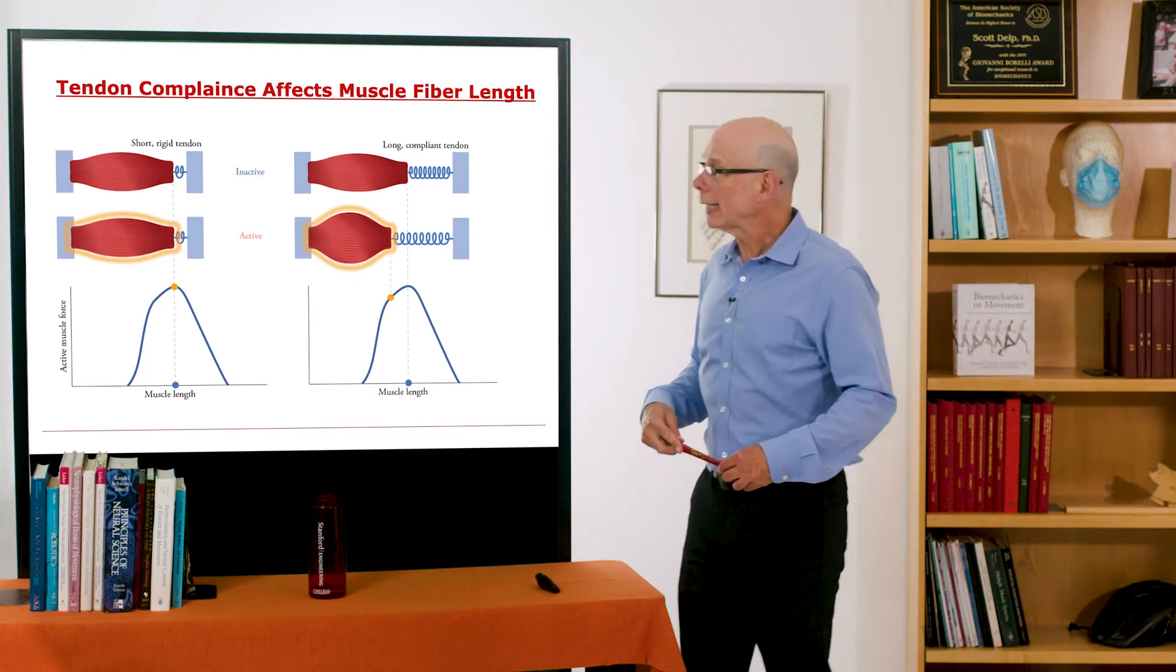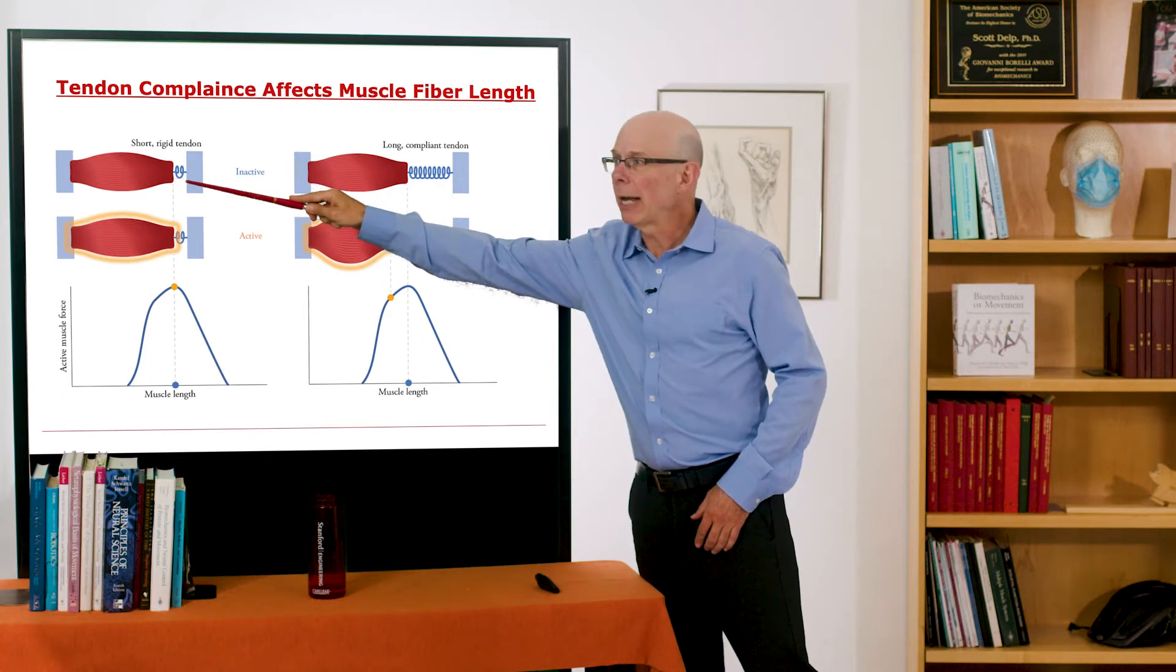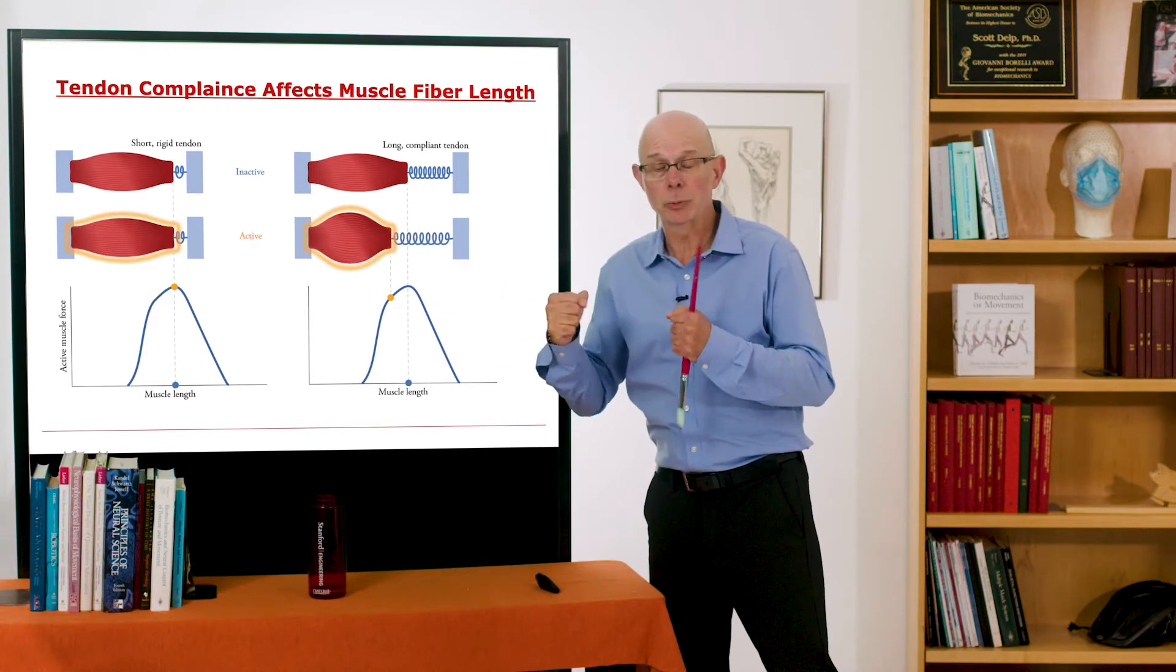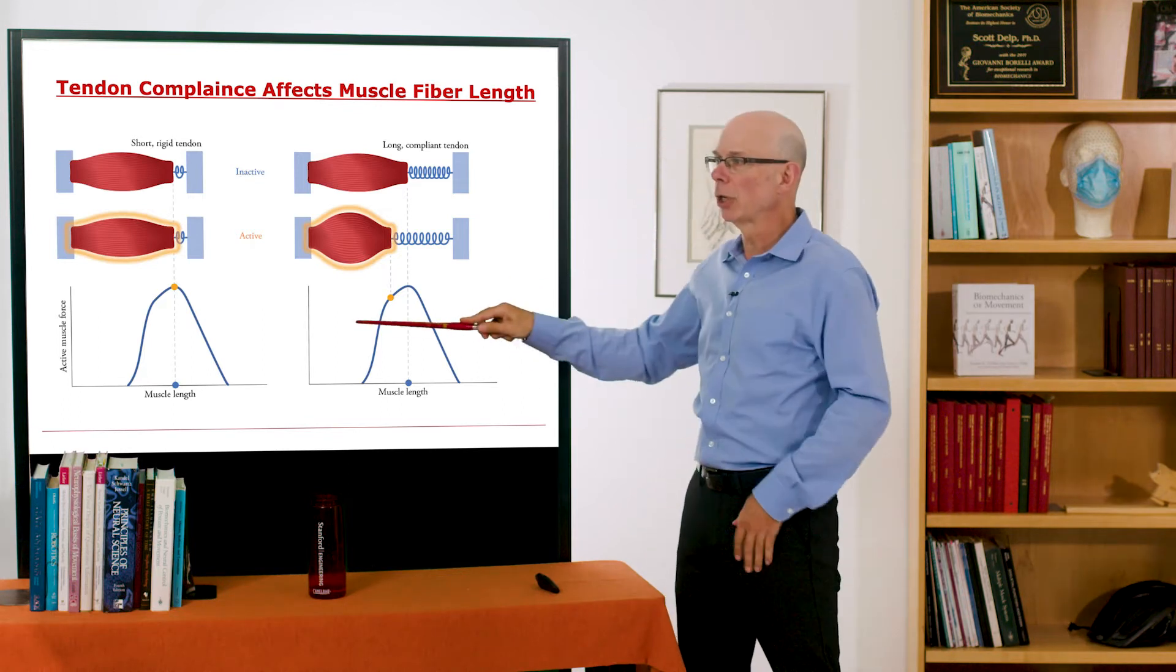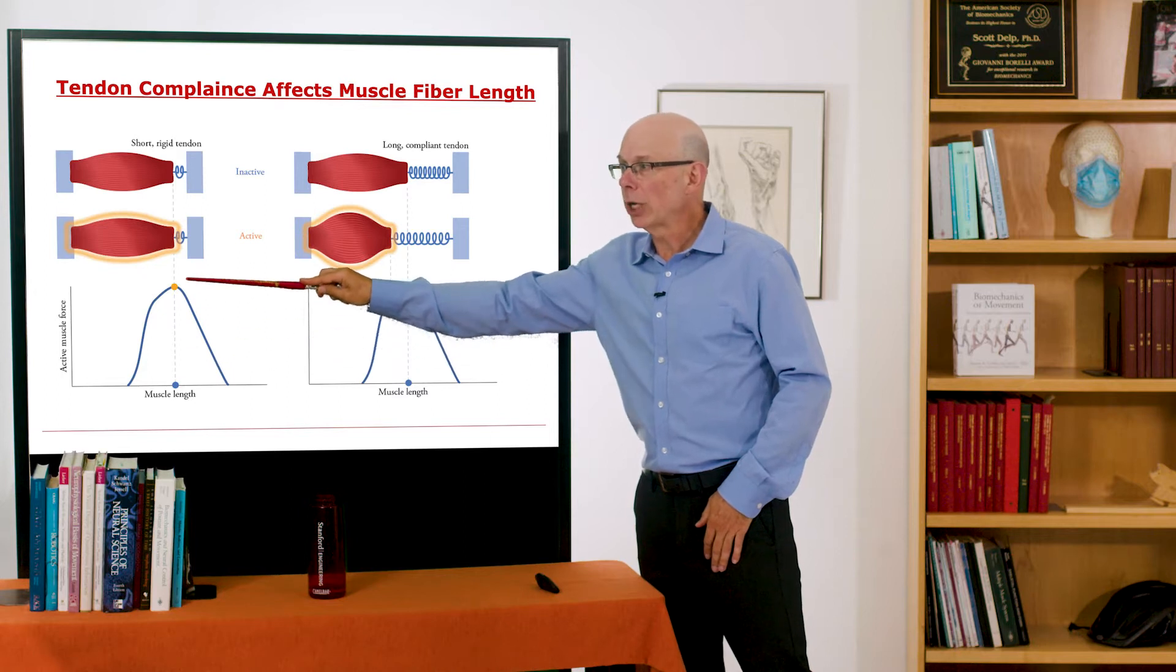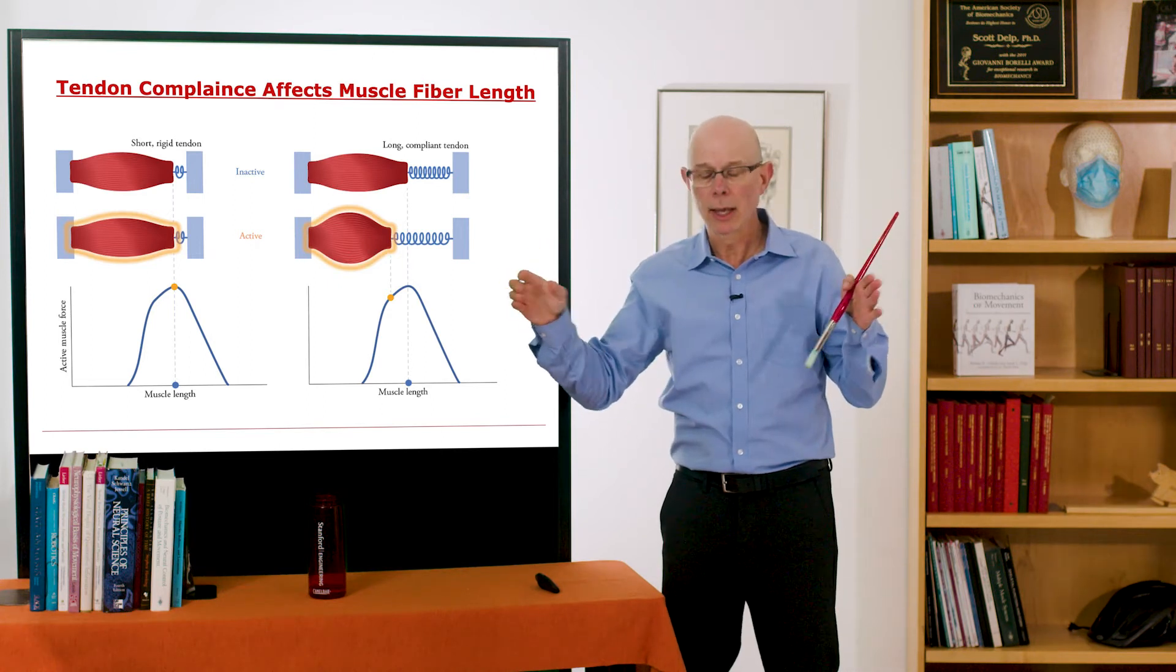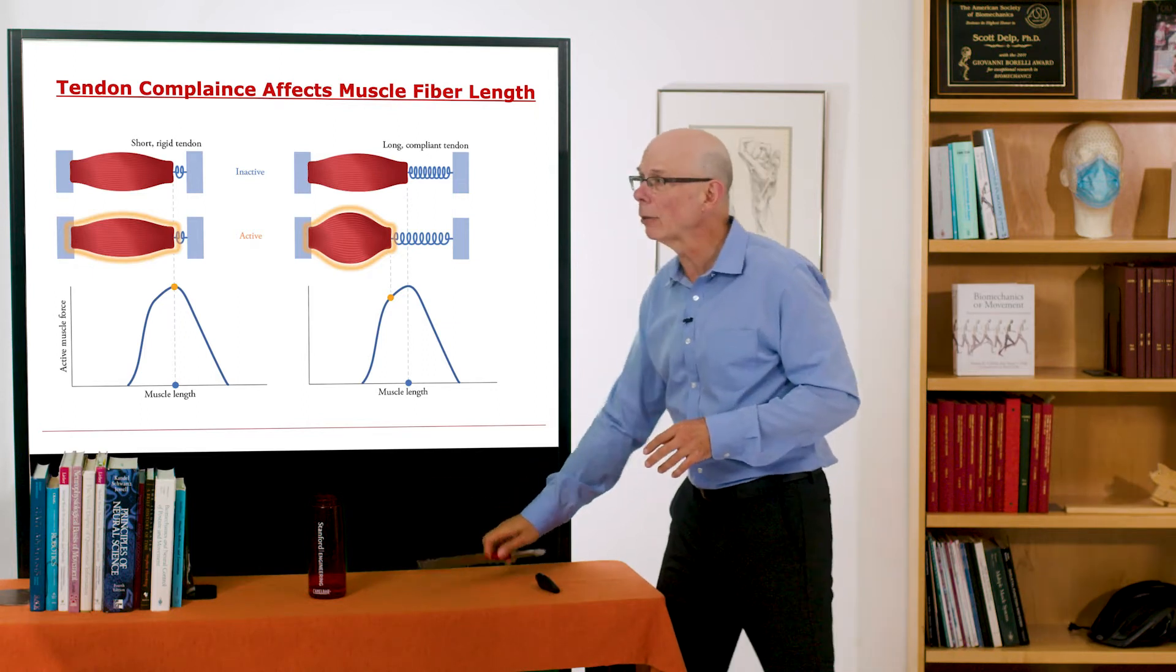So let's say I have a muscle that has a certain set of fibers, but it has a short rigid tendon. I then excite that muscle. So the muscle is now generating force because the tendon is so short, it's essentially rigid. It doesn't stretch much. So the muscle length doesn't change much because the tendon doesn't stretch. The fibers and tendon are in series. And if the tendon stretches, the fibers will shorten. And that's exactly what we see here.